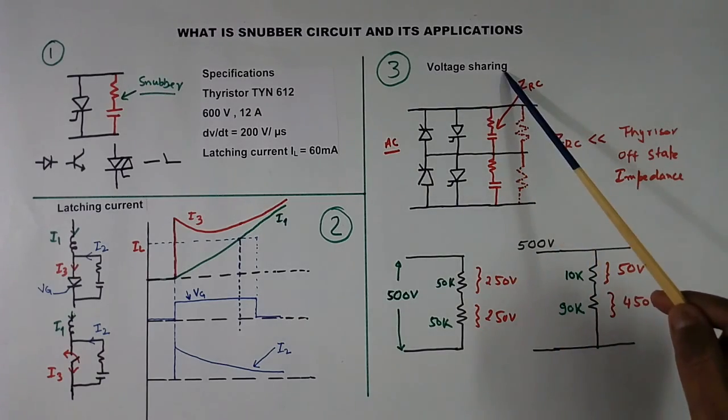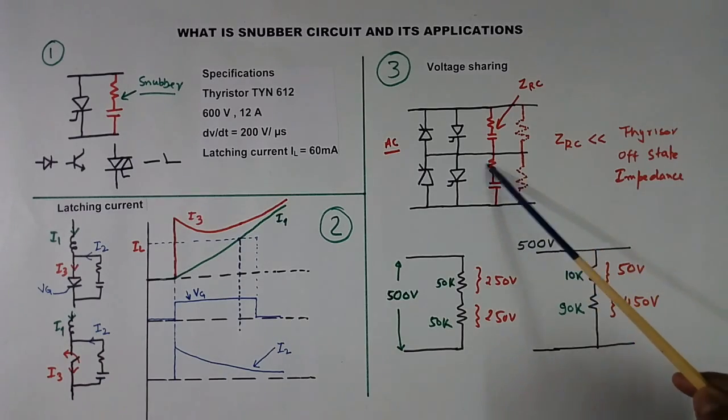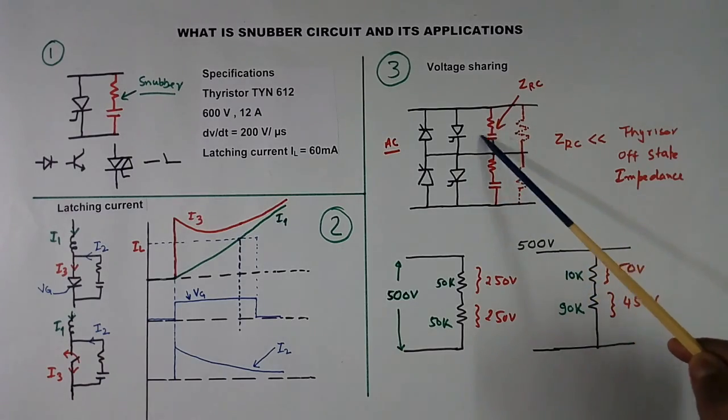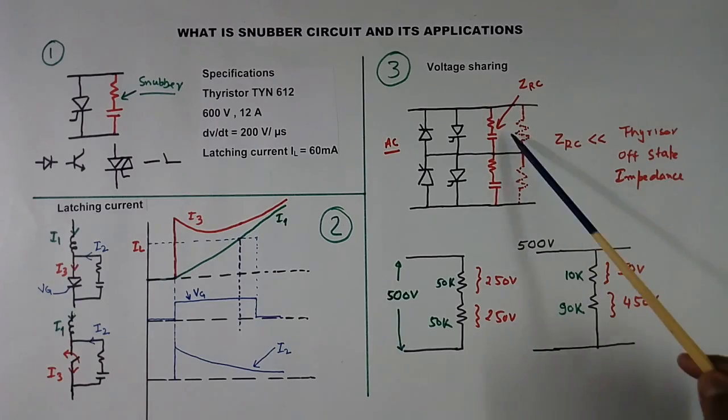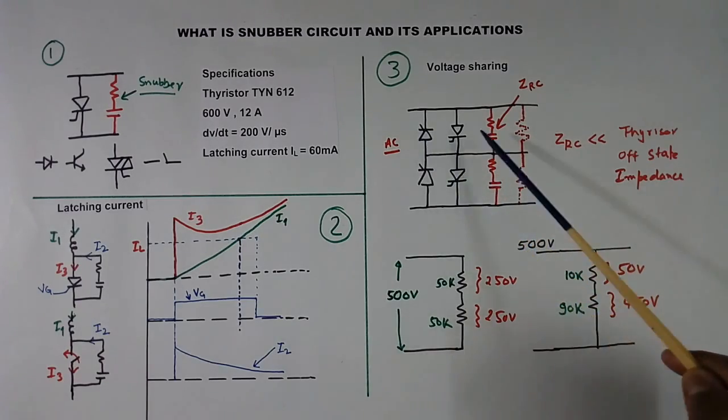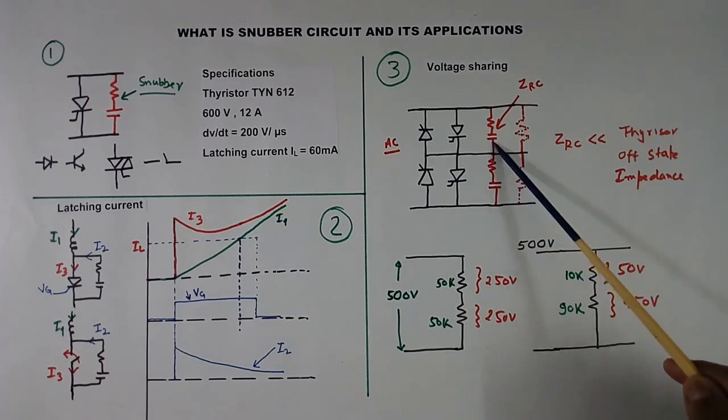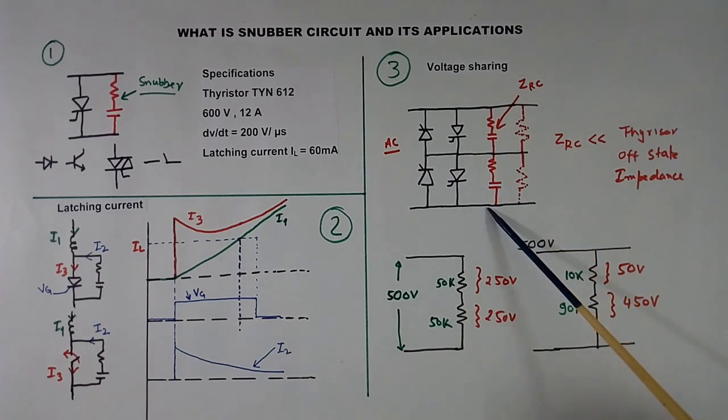To improve voltage sharing, we connect RC. This RC impedance, these RC impedances are equal. And this ZRC value is much less than impedance of this. So this decides the sharing, not this. When they are equal, you will get 250V here, 250V here.